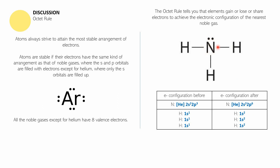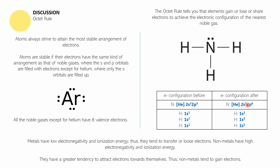So instead of only having one, two, three, four, five electrons, nitrogen will now have one, two, three, four, five, six, seven, eight electrons. And each hydrogen, instead of only having one electron, will be sharing one more with nitrogen — making each hydrogen have two electrons. So from 1s1, they become 1s2 — more stable. And nitrogen goes from 2s2 2p3 to a complete 2p6 — more stable.